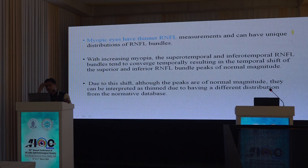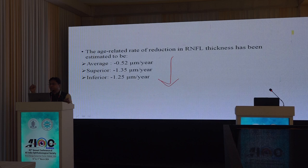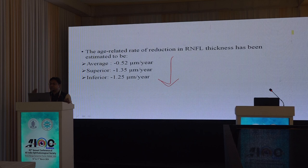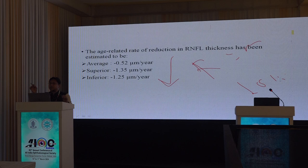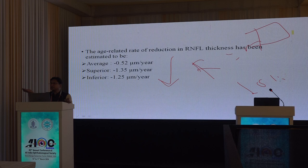Myopic eyes typically have thinner RNFL, so check the refractive status before interpreting. Age-related RNFL thinning is real — if a patient's thickness was 122 and five to ten years later it is 118, this may be normal age-related change and not progression. Know what the previous RNFL thickness was before interpreting current values, and account for expected age-related decline within the green zone.